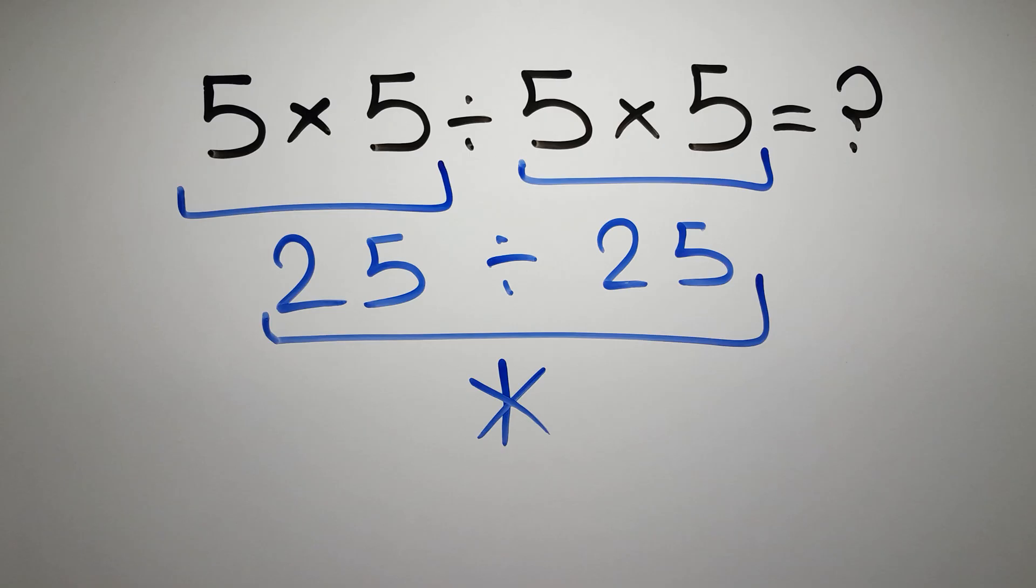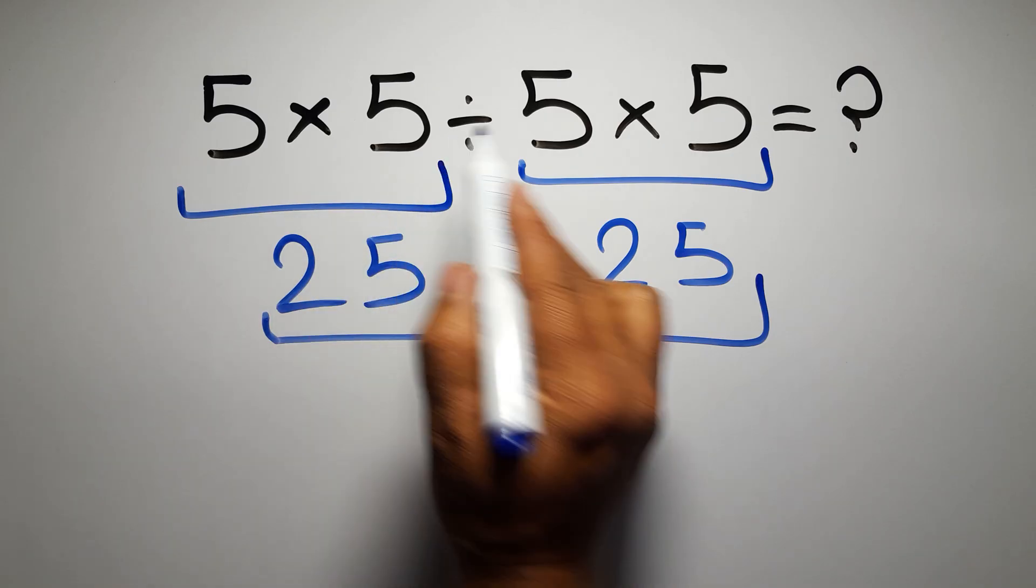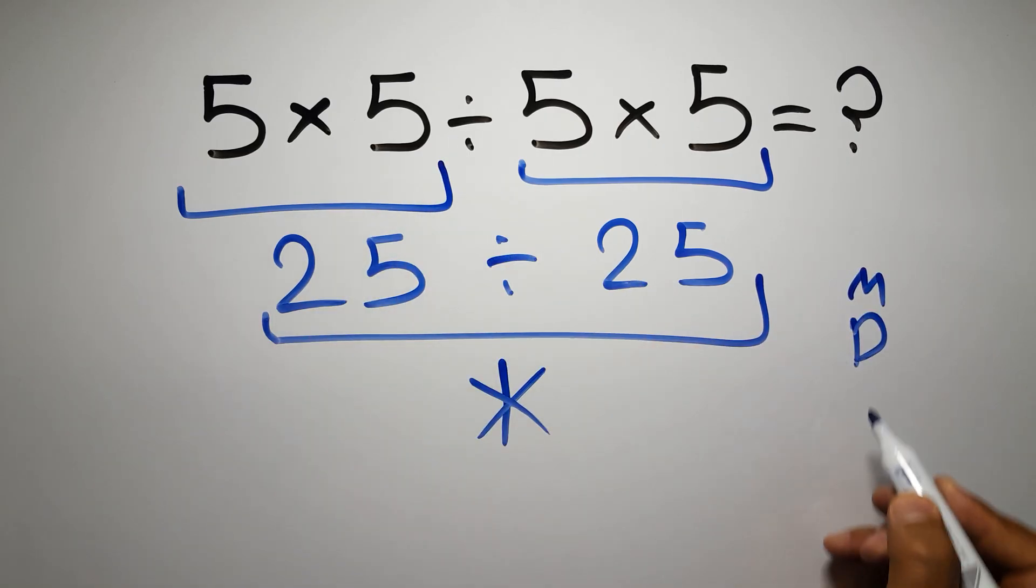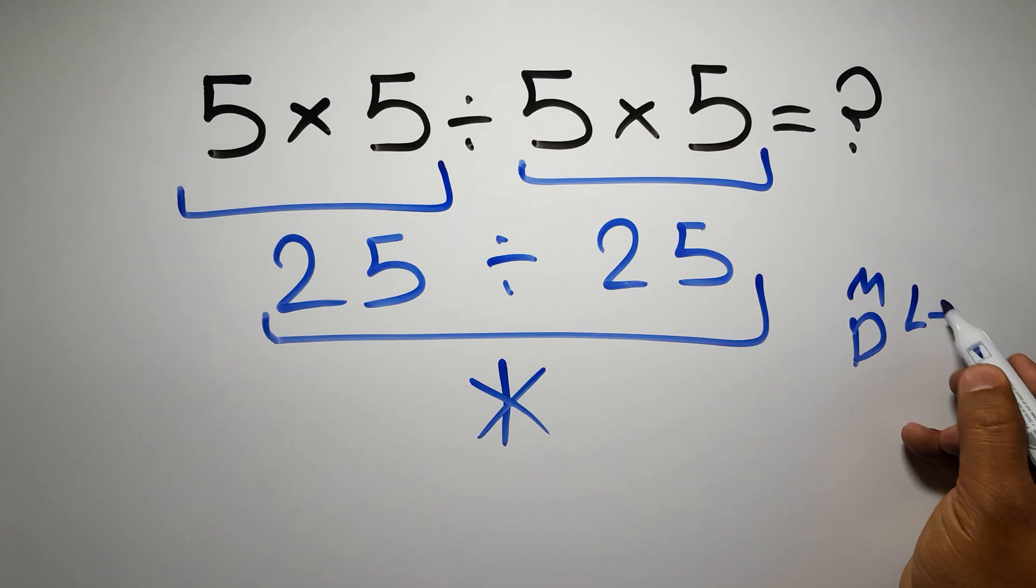Because according to the order of operations, multiplication and division have equal priority, and we have to work from left to right.